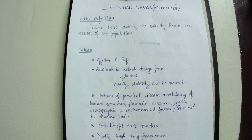First of all, the drug should be effective and safe. Next, it should be available in a suitable dosage form. It should be available in a suitable dosage form in order to assure the quality and stability of the drug. The choice is also made based upon the pattern of the prevalent disease — that is, the frequency of distribution — as well as the availability of trained personnel, financial resources, sanitary, demographic, and environmental factors.